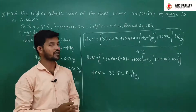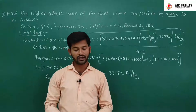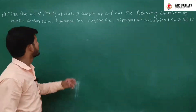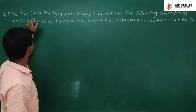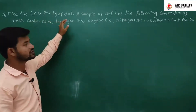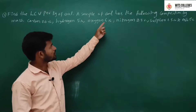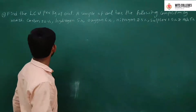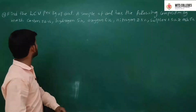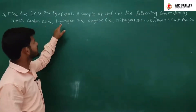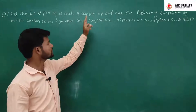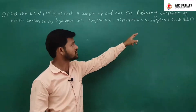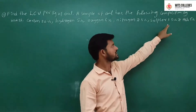In this manner, we solve another problem of higher calorific value and lower calorific value. This next problem asks: find the lower calorific value per kg of coal. A sample of coal has the following compositions by mass — carbon 80%, hydrogen 5%, oxygen 6%, nitrogen 2.5%, sulphur 1.5%.